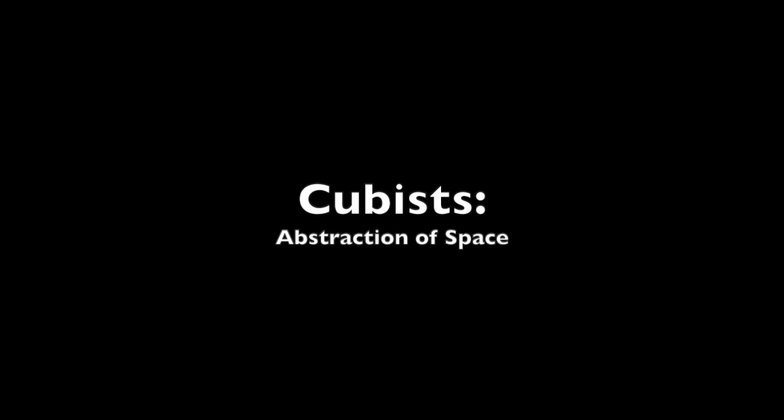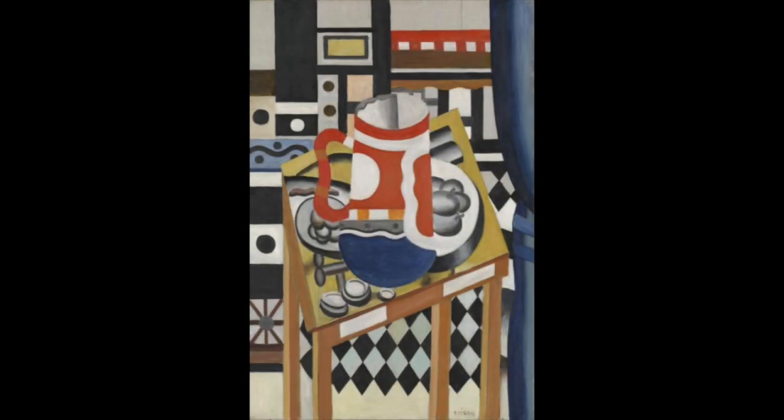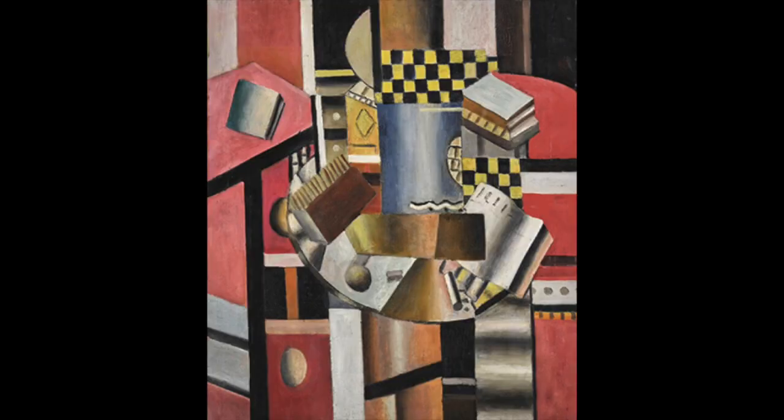Cubism was one of the major artistic movements of the 20th century. It abandoned traditional techniques of perspective and foreshortening, instead seeking to capture several perspectives and angles in a single artwork using flattened geometric shapes. Cubism has its roots in Cézanne's work — Cézanne emphasized the two-dimensionality of the picture plane through simplistic geometric shapes.